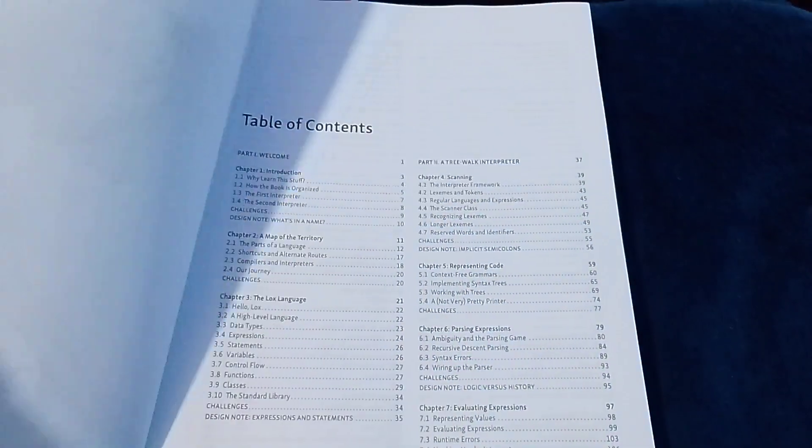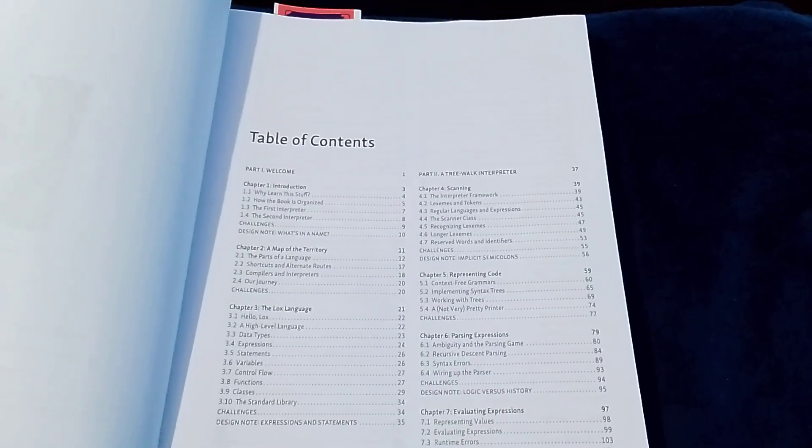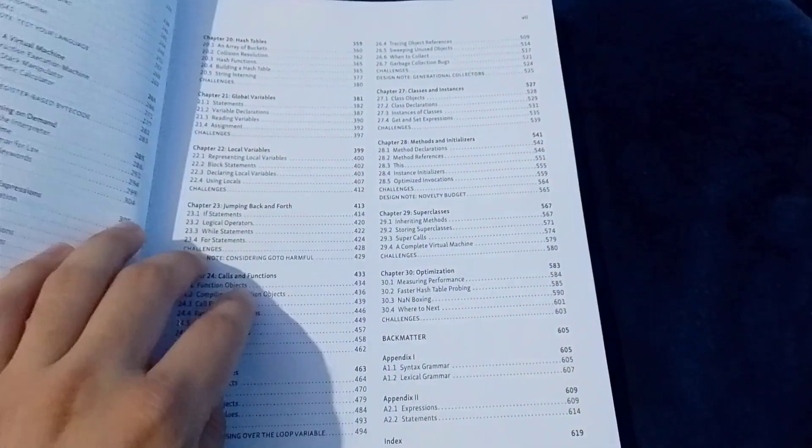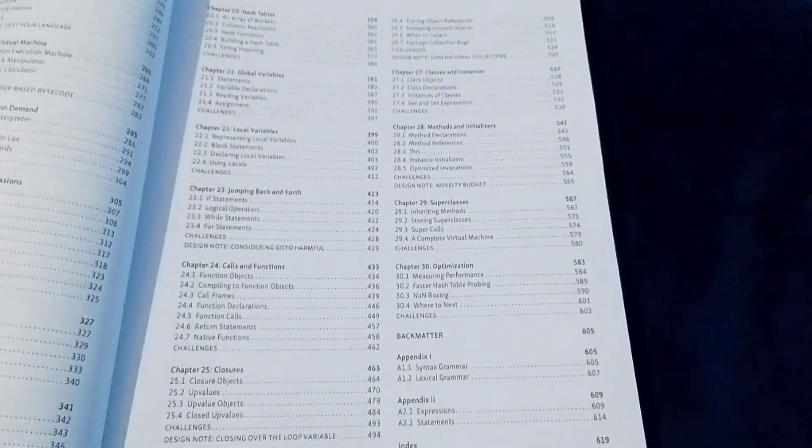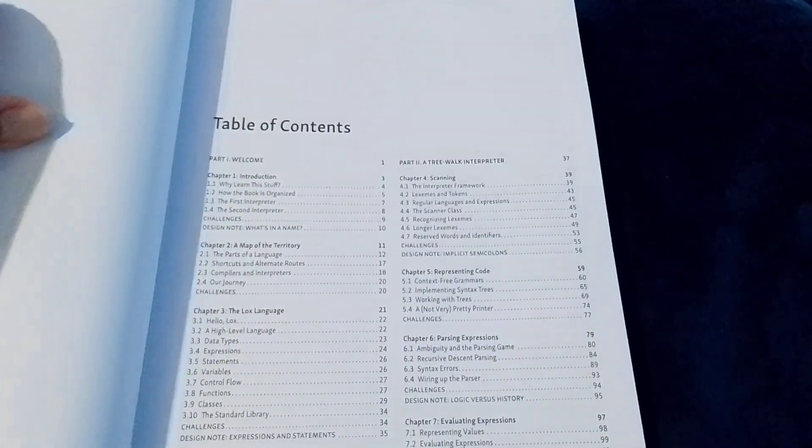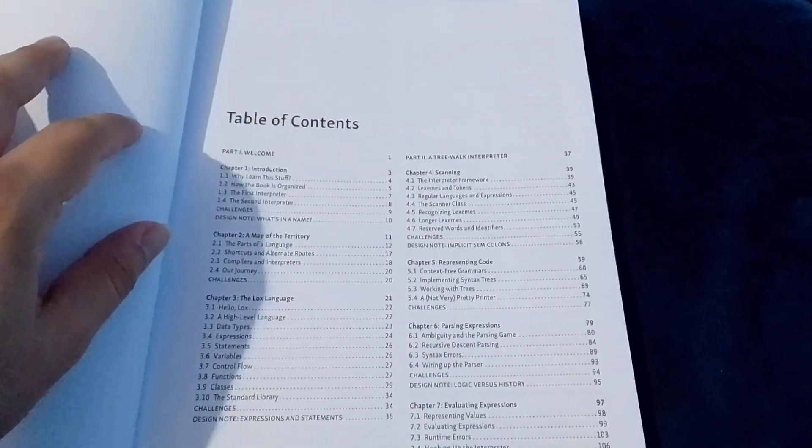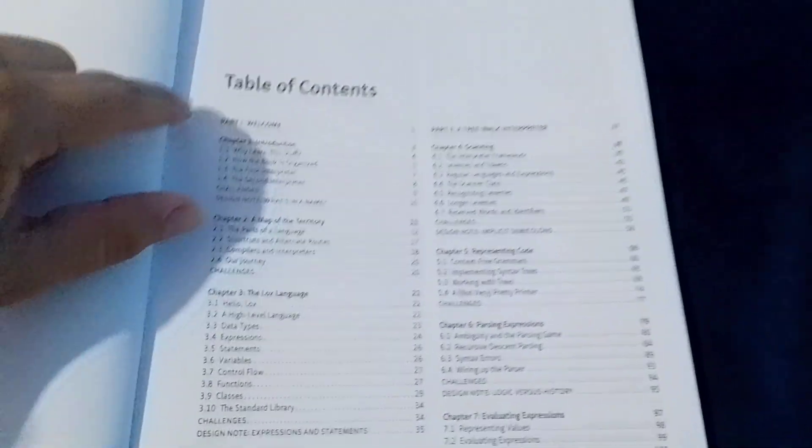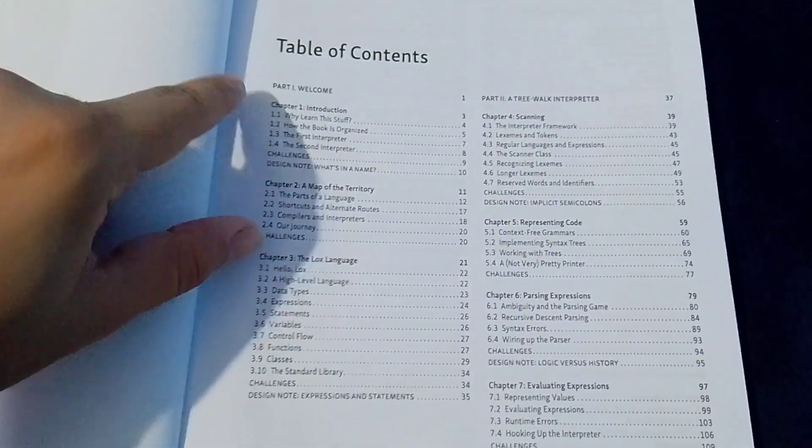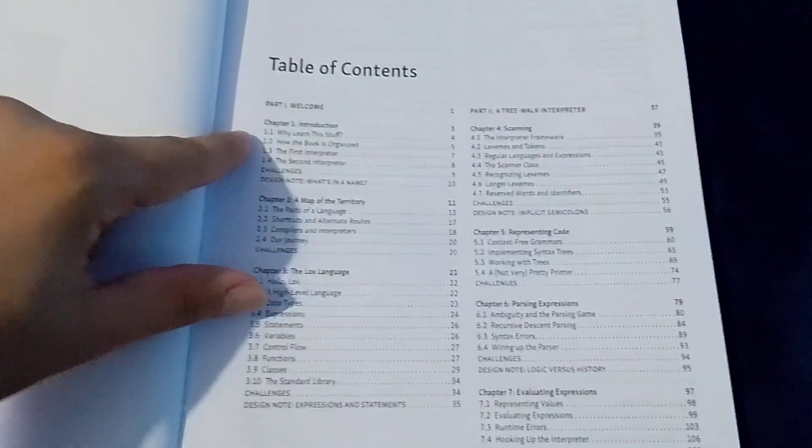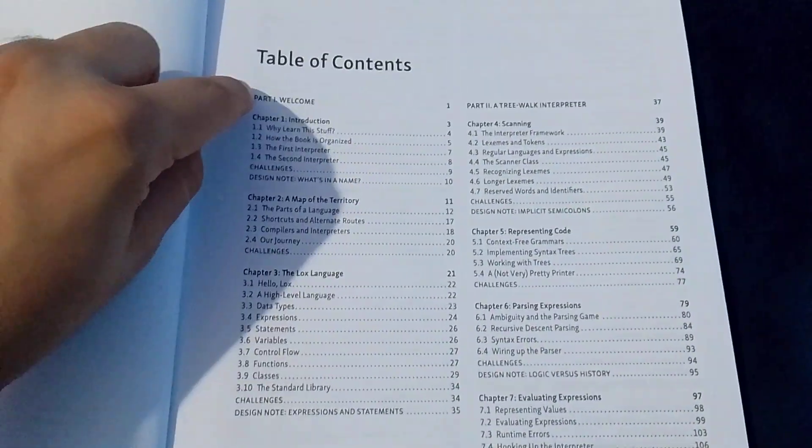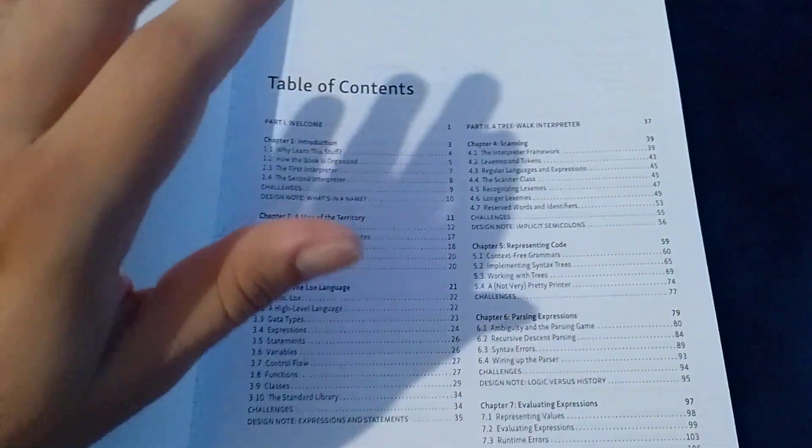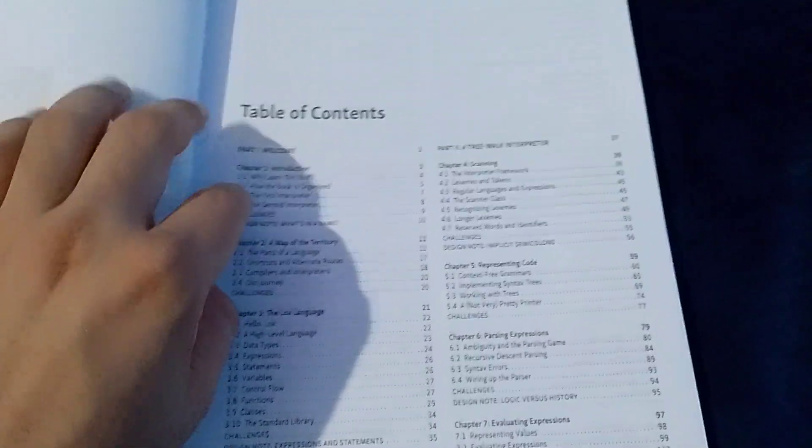Moving on. So, this book has 30 chapters. And is divided in three parts. The part one is actually composed by three chapters. It's just, like he said, a welcome to the book. Just to get familiar with what we are going to do.